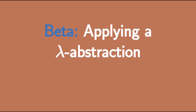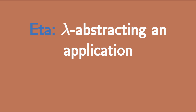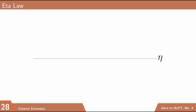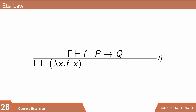Eta is kind of the opposite of beta. Beta says what happens if I apply a lambda abstraction; eta says what if I lambda abstract an application. The eta law says: if in context gamma I have a term f of type P arrow Q, then 'lambda x dot f(x)' is the same as f itself. Every term of type P arrow Q — every function from P to Q — is essentially a lambda.